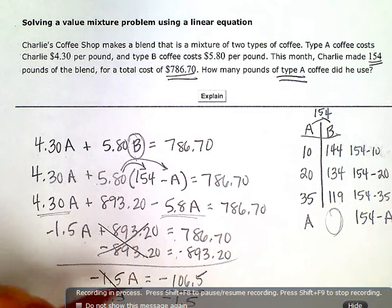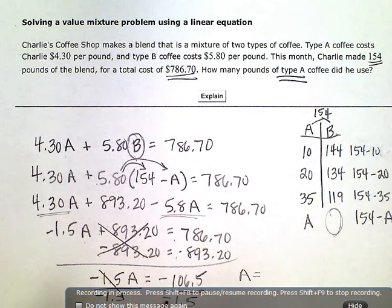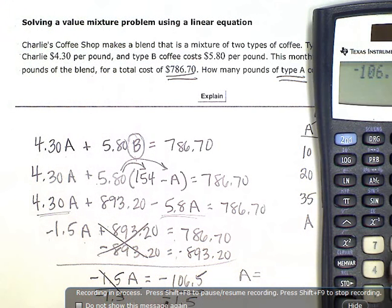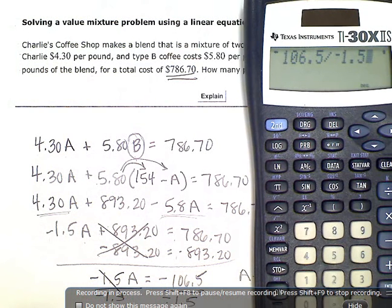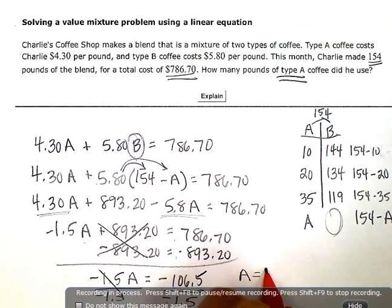And if I simplify over here, negative 106.5 divided by negative 1.5, I get 71. So A is 71. Or there were 71 pounds of A. Coffee A.